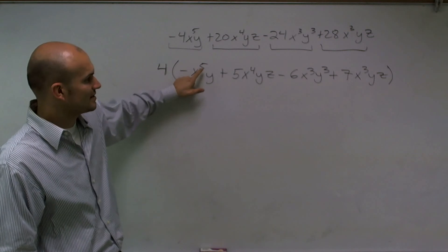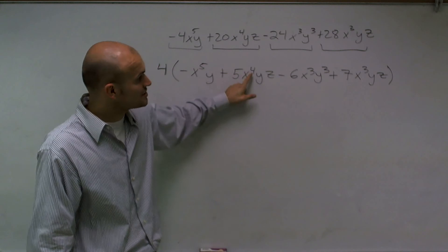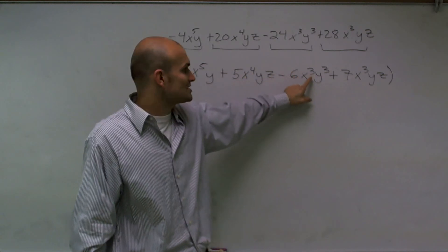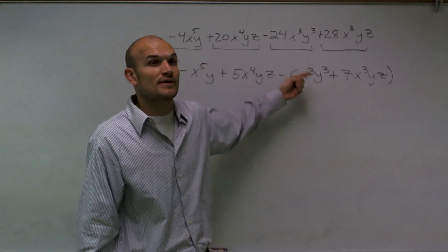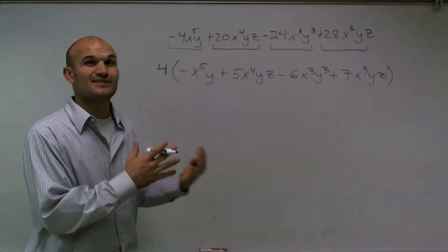Well, I have an x to the fifth. I can't factor out an x to the fifth out of an x to the fourth. So now my largest is x to the fourth. And then now I look at my x to the third. It's going to be my largest exponent that I can factor out.